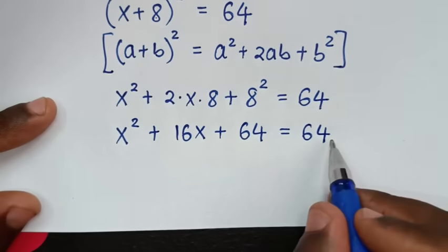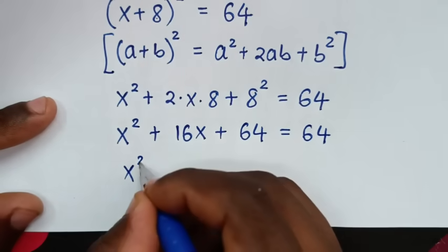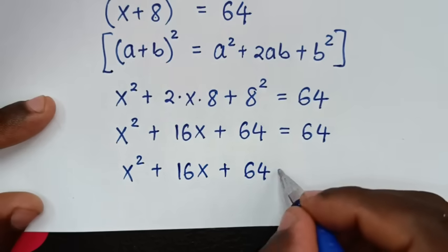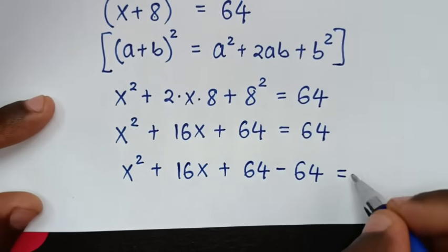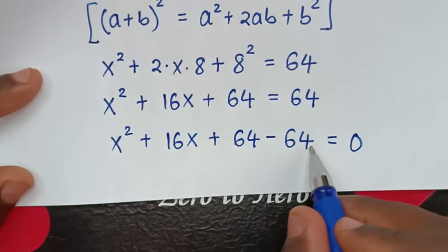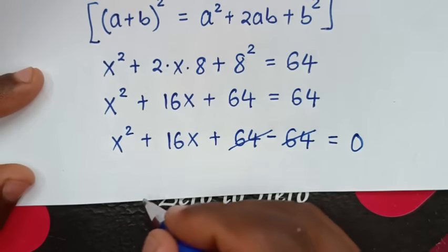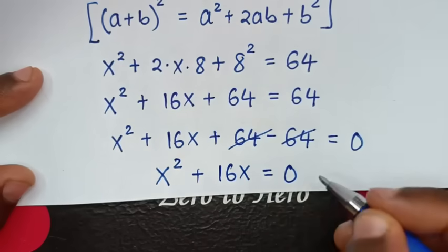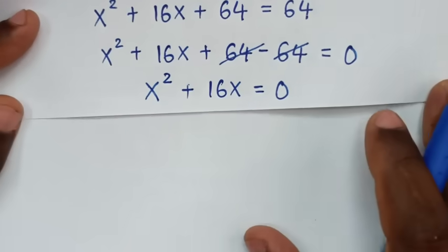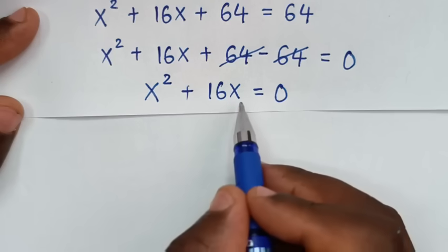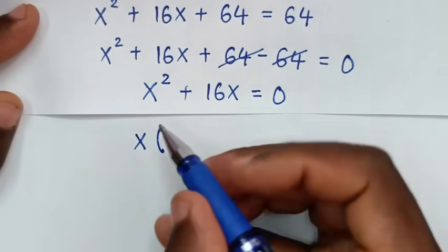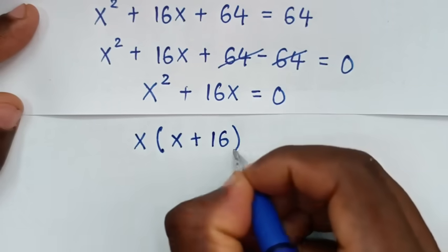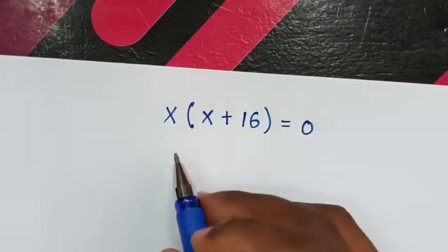Then we take 64 to the left side, so x² + 16x + 64 − 64 = 0. Since 64 − 64 = 0, those cancel, leaving x² + 16x = 0. In the next step, x is a common factor, so we factor it out: x(x + 16) = 0.